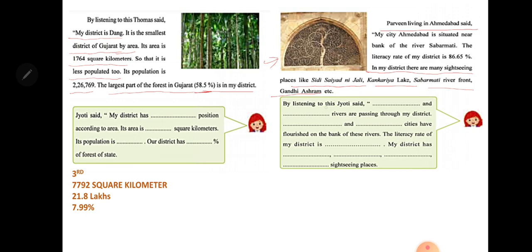By listening to this, Jyoti said: Vishwamitri River is passing through my district Vadodara, while Mahi River passes through the north direction of Vadodara and Narmada passes through the south direction of Vadodara.